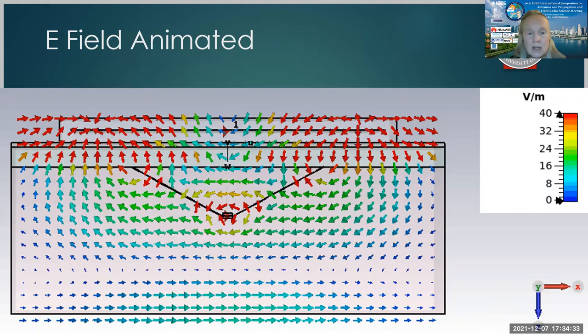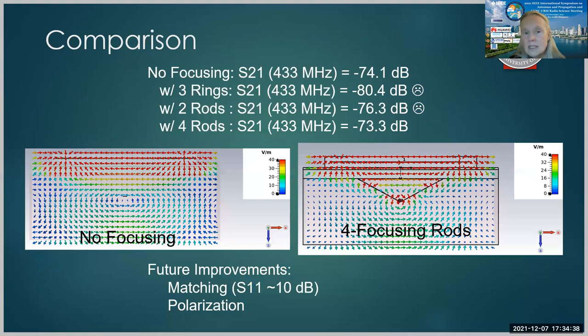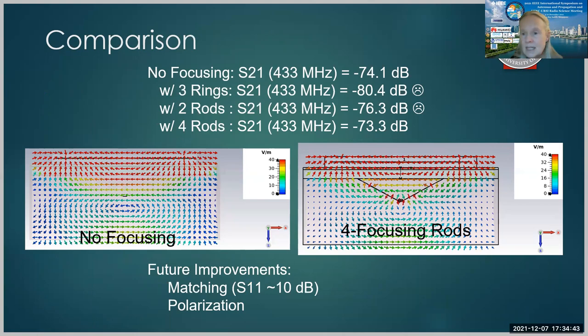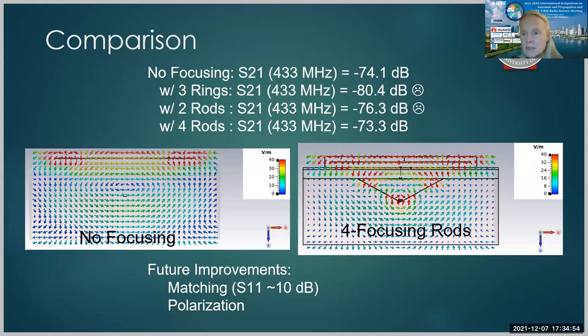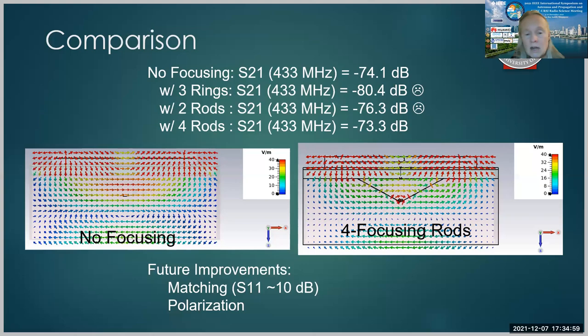So in conclusion, when we have no focusing and even if we use three rings, two rods, four rods, we get more power into the location that we want, but we don't do a great job picking it up. So future improvements are improving the matching. The S11 for all of these internal coils is on the order of 10 decibels. So we can probably do a better job with the matching and also changing the antenna so that we do a better job picking up the polarization that's actually concentrated at that location.